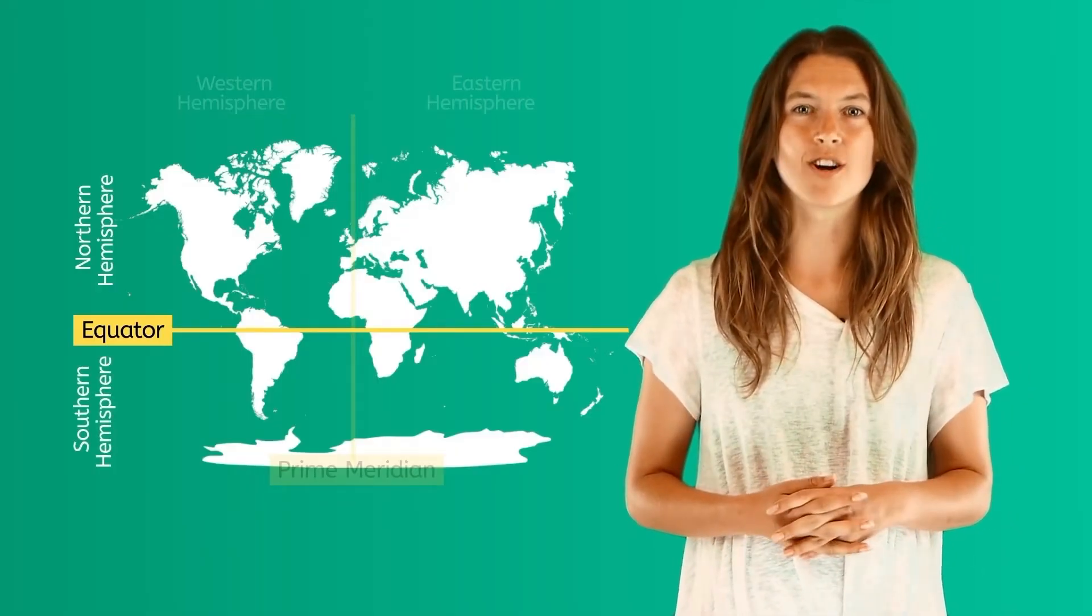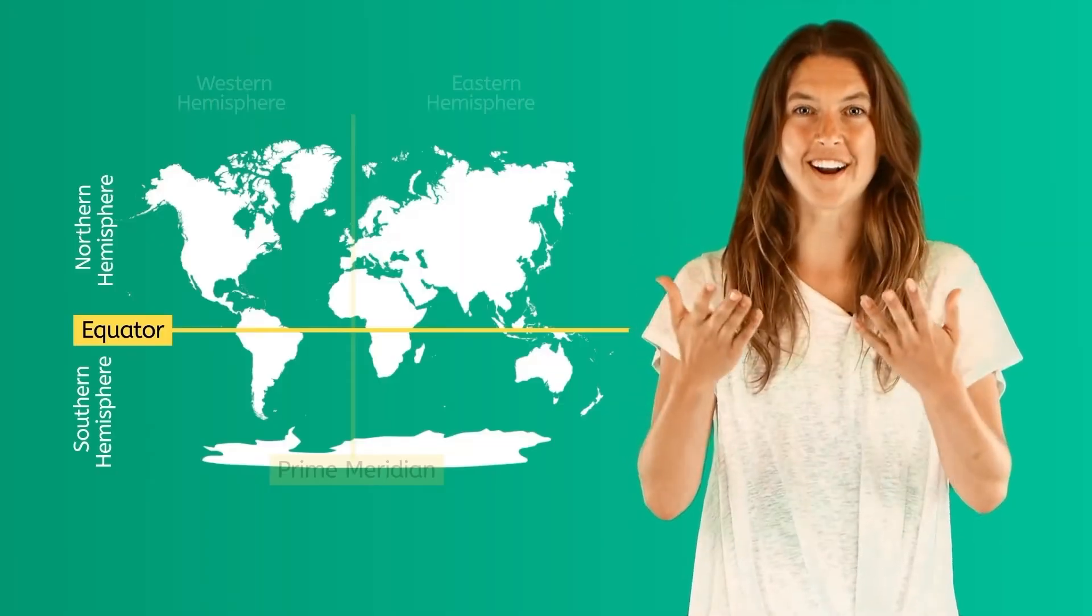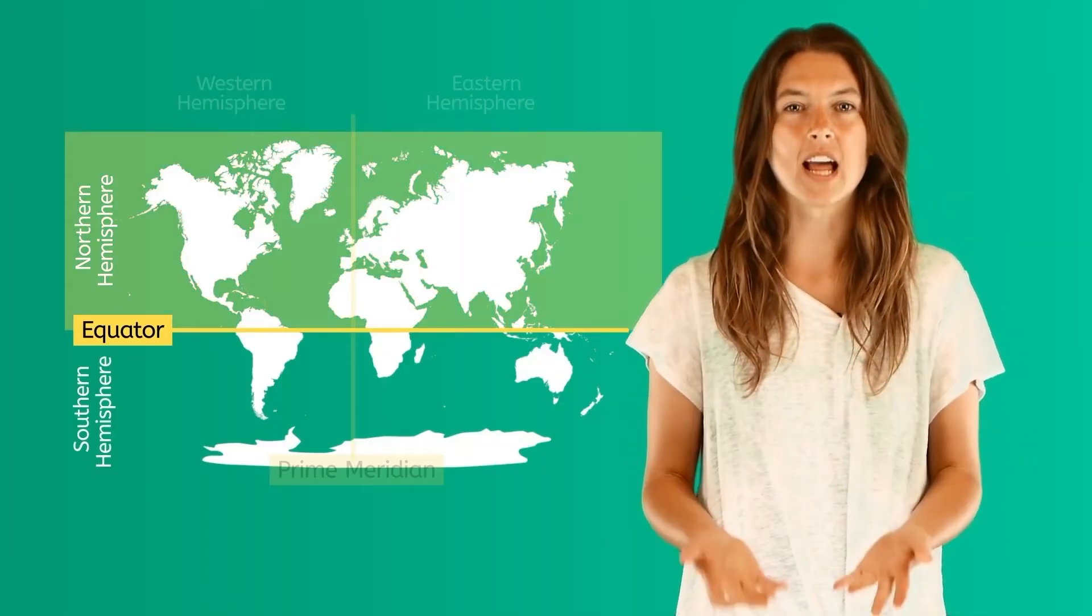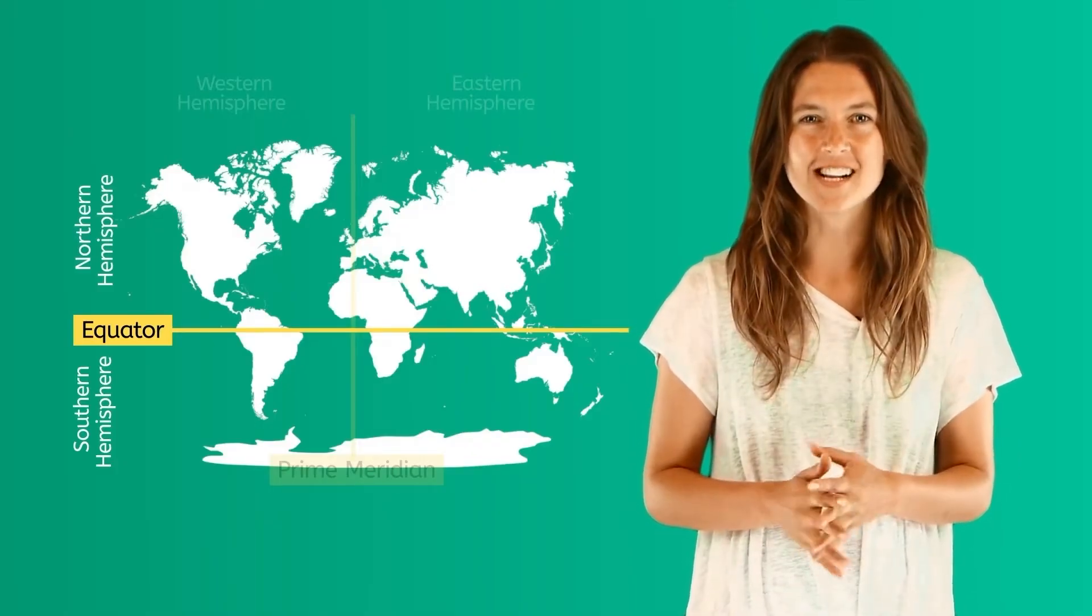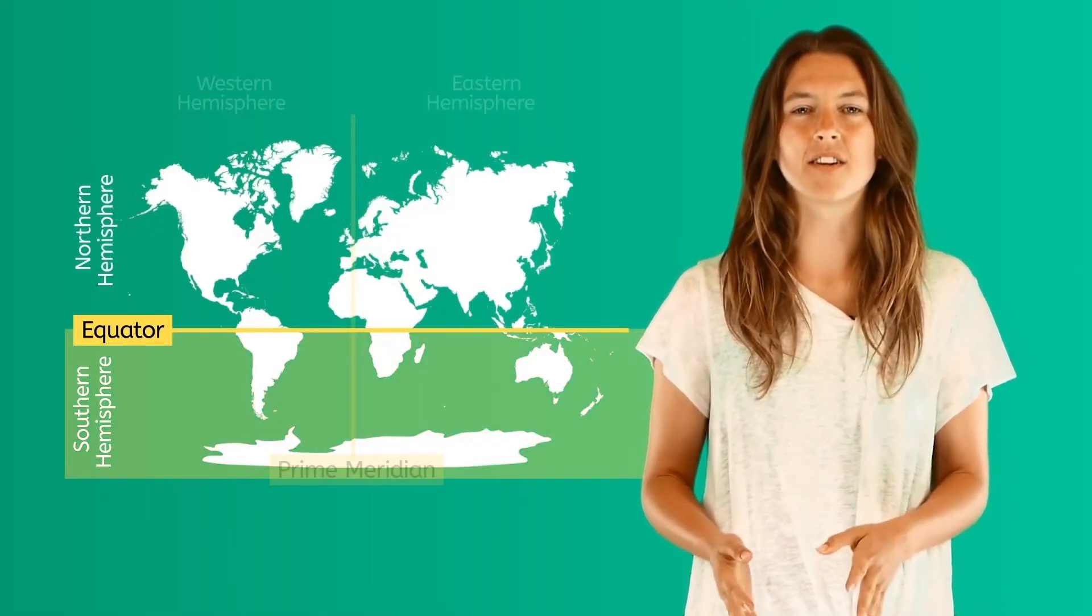All continents, countries, and oceans found above the equator are considered to be in the Northern Hemisphere, and continents, countries, and oceans located below the equator are considered to be in the Southern Hemisphere.